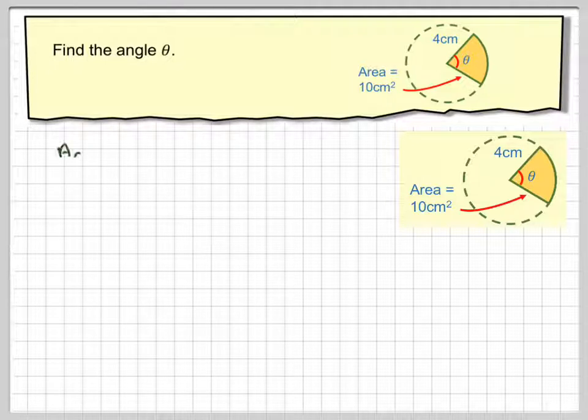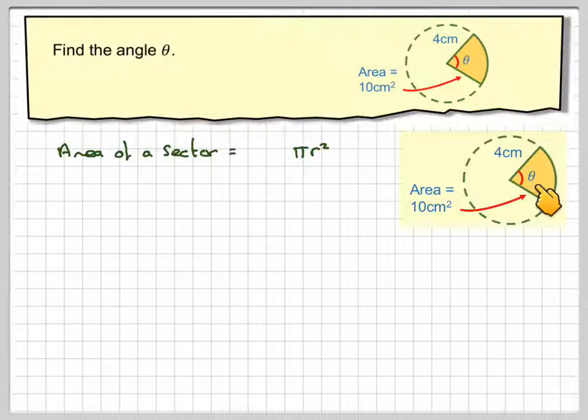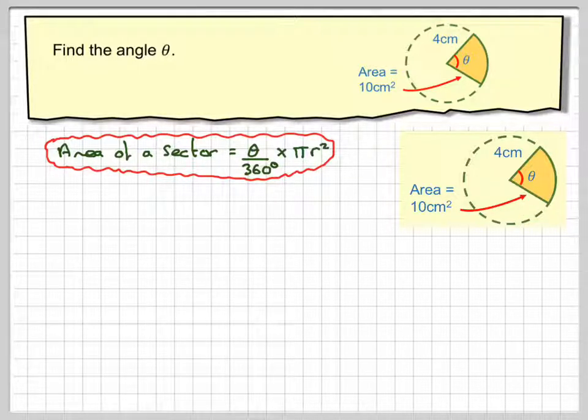So drawing that out, we know that area of a sector is πr² times theta over 360. This is the area of the circle, and we multiply that by theta divided by 360 because that's the fraction of the circle it is.